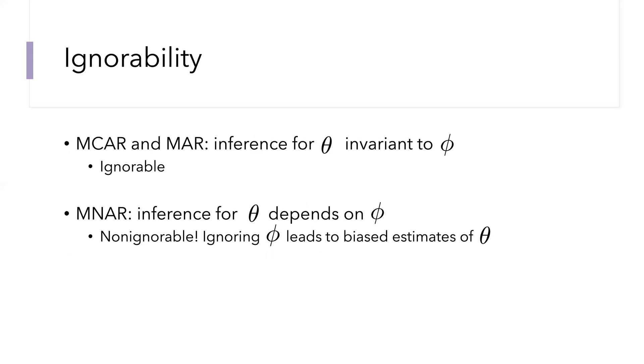This is relevant for what we call ignorability, because MCAR and MAR missingness mechanisms make it so that we can do inference for theta, the parameter we care about, without having to know anything about the parameters governing the missingness model. In other words, inference for theta is invariant to the parameters phi.